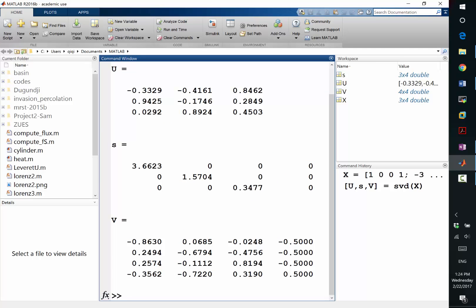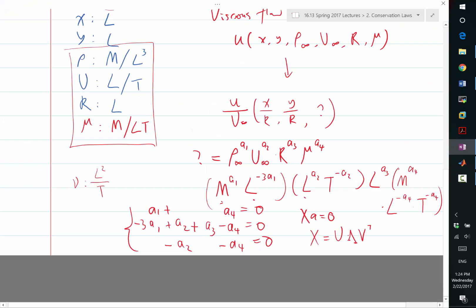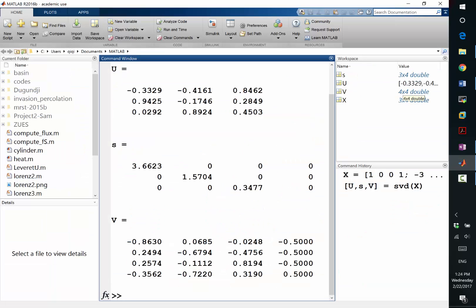Now, if you look at the corresponding column of V, it's the last column. That gives you the powers being 0.5, 0.5, 0.5, sorry, minus 0.5, minus 0.5, minus 0.5, and 0.5. Does that make sense? Okay, so let me write down my solution to the question mark. My question mark in this case, what I get is the square root of mu divided by rho infinity U infinity R. Right? That's what the answer tells me. Minus 0.5, minus 0.5, minus 0.5, and 0.5.